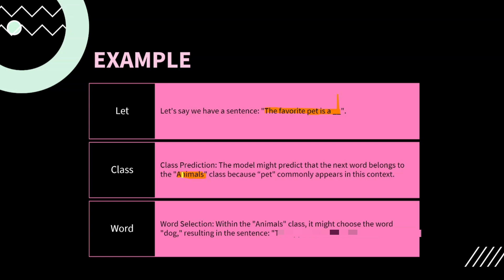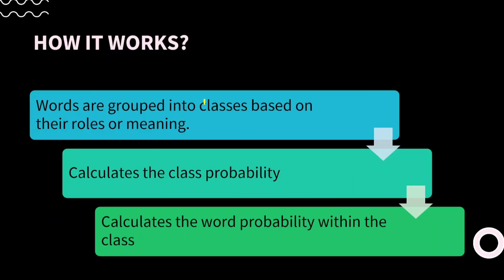So the first task of the computer is completed — it has predicted the class. Next, within that class there are different words like dog, cat, lion, and so on. From those words, it checks which word is most suitable to place in the blank. If it finds that 'dog' is the best suitable word, then it selects that word.